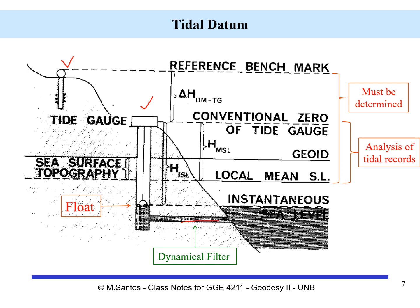The sea level will vary, and after some time there will be an analysis of the tidal records, and then the position of the local mean sea level will be defined with respect to a zero mark of the tide gauge — what we call the conventional zero of the tide gauge.